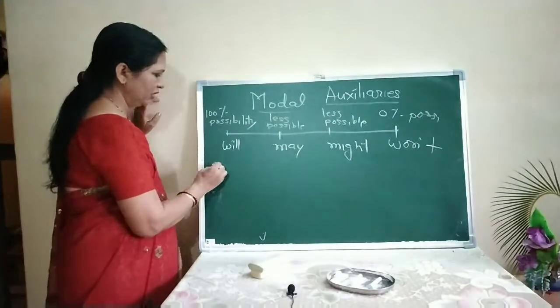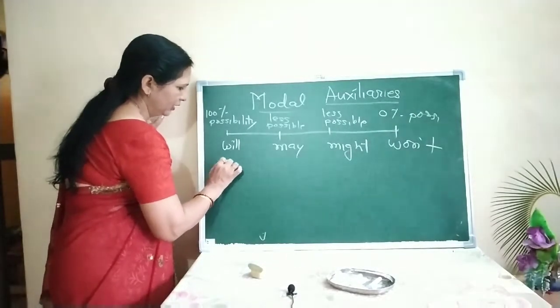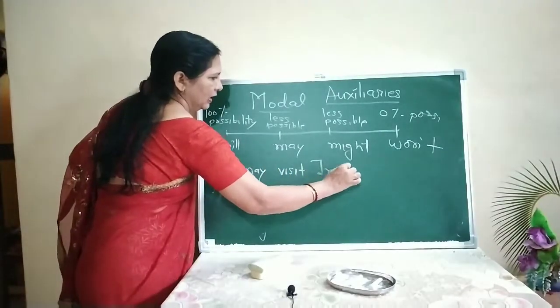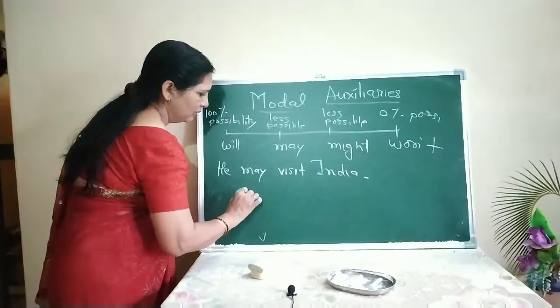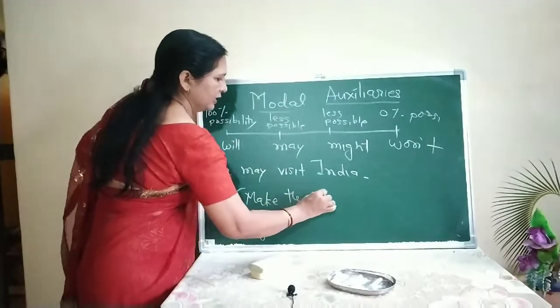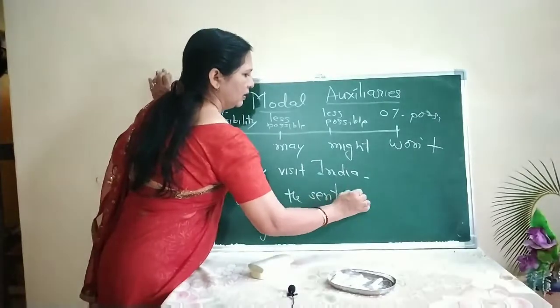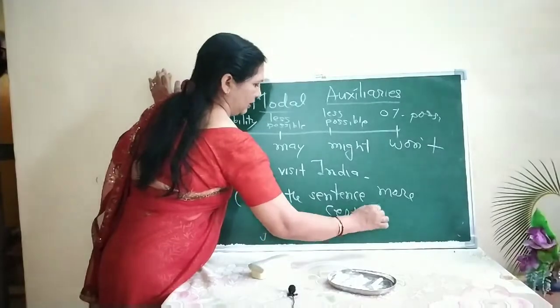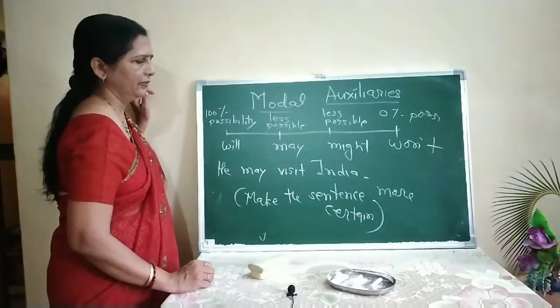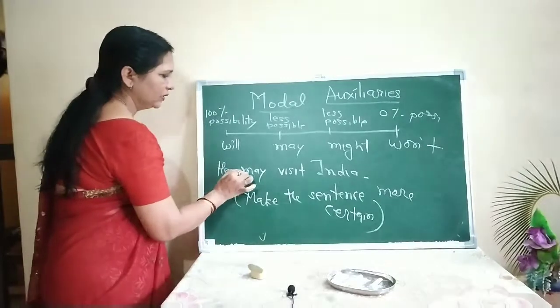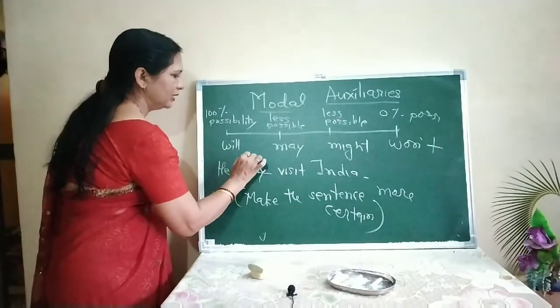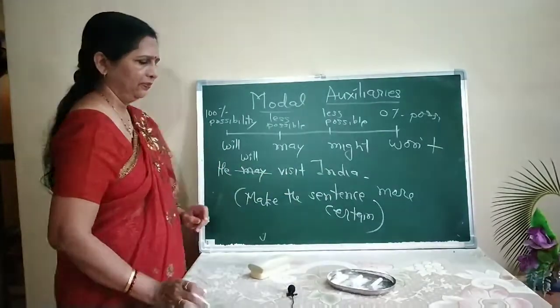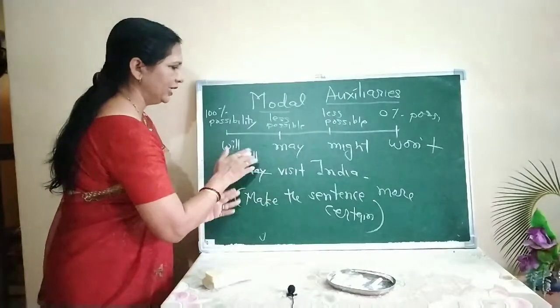So, there can be a question like this. 'He may visit India.' And the question is, make the sentence more certain. So what you will do? You will cancel may and you will write will. 'He will visit India.' So this is how possibility increases.